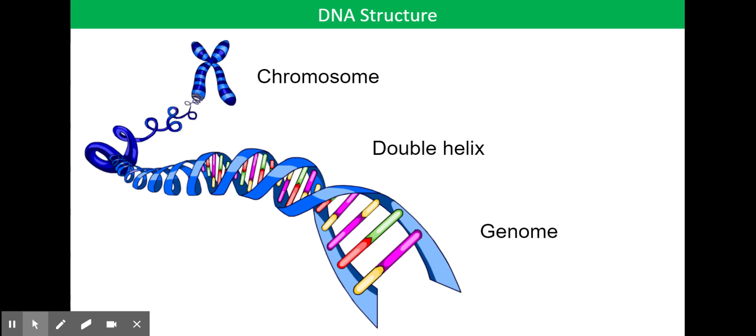The DNA molecule has a spiral shape, like a twisted ladder, and that's called a double helix. Your whole DNA, so all 46 chromosomes, is referred to as your genome.